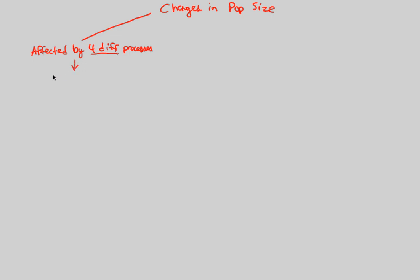We can state that the change in population size is equal to four components interacting with each other. First, there are going to be births within the population — these obviously increase the population. We also have to account for immigrants, people being added into the population. These are things coming into the population. But we cannot stop there: we also have to account for the fact that individuals in the population must be dying as well, so we subtract deaths because we're trying to figure out the size of the population.